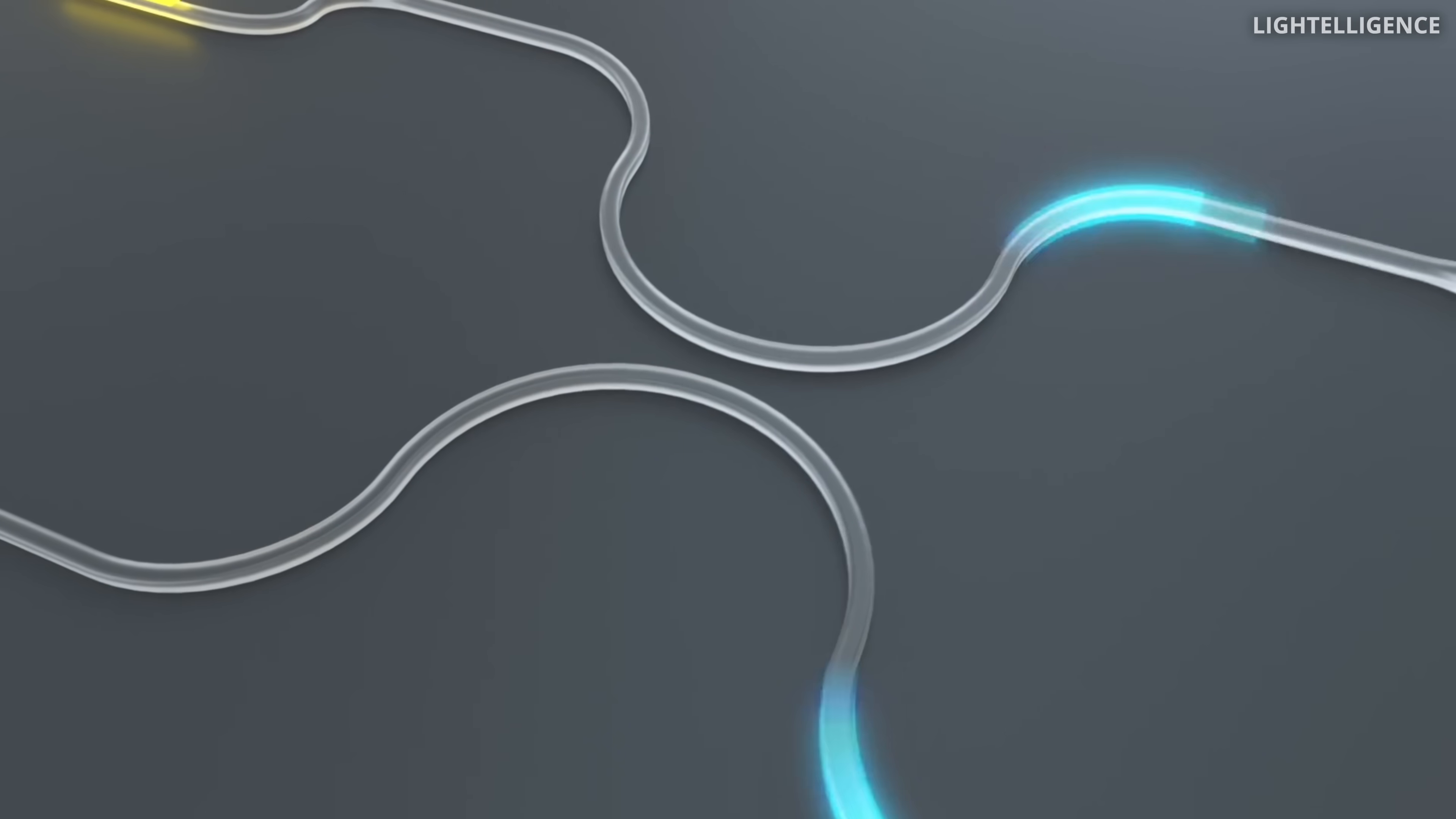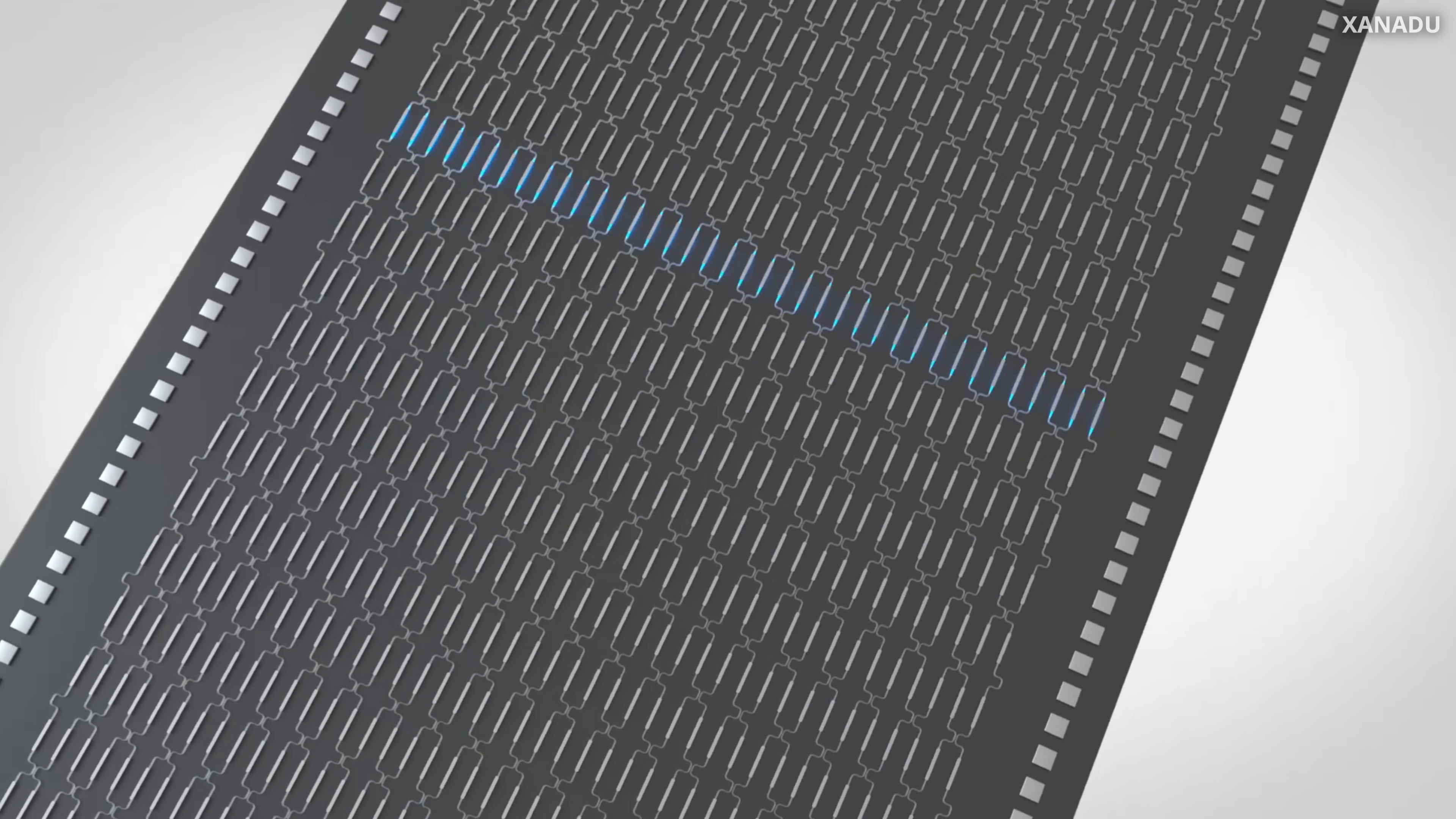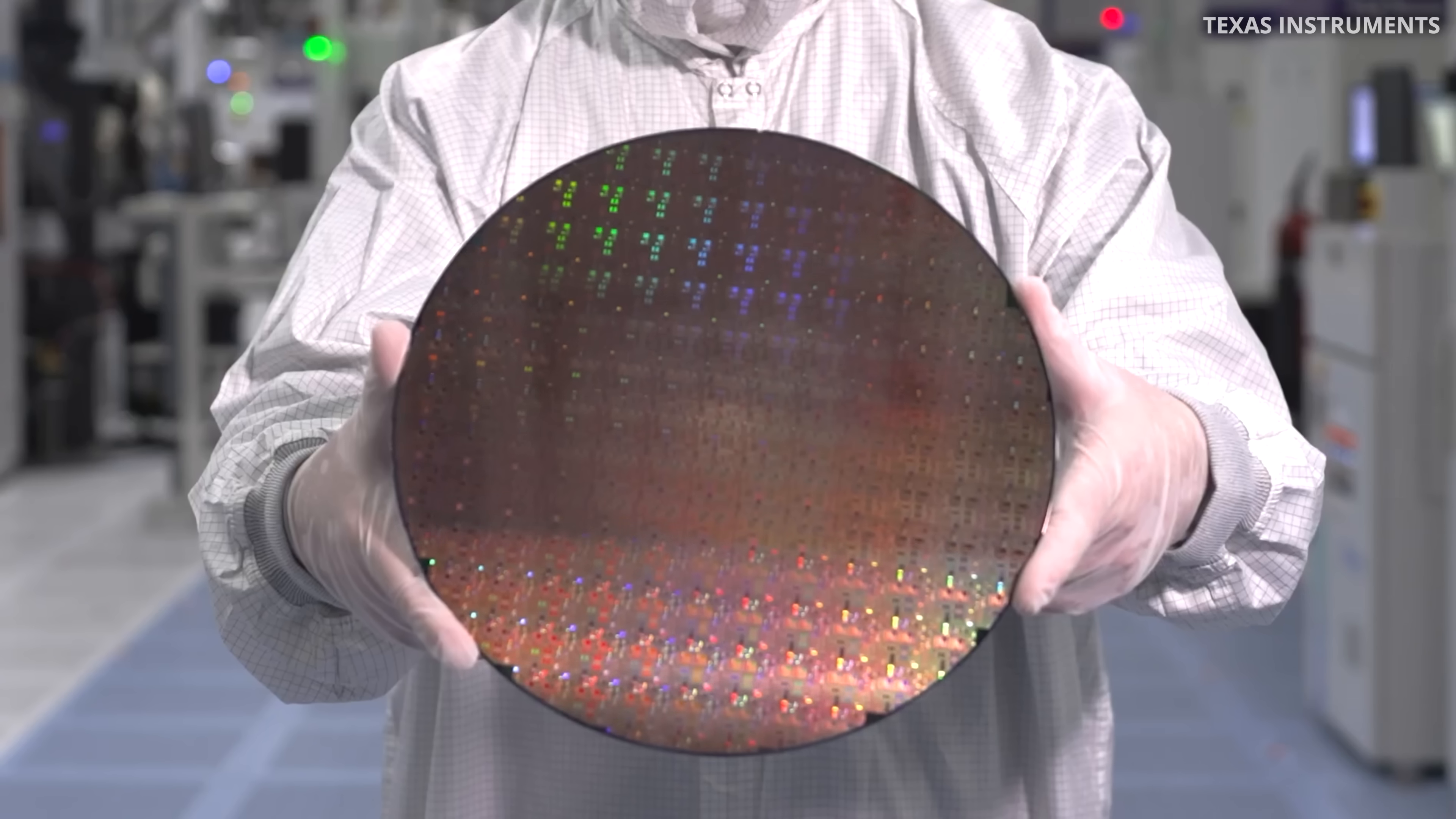It's faster, cooler, and it's perfect for zipping data around chips and data centers. And when it comes to controlling light at the nanoscale level, one name constantly keeps popping up: graphene. Now, why graphene?